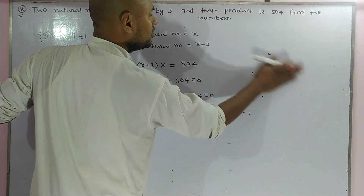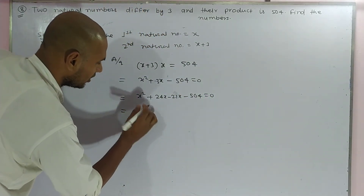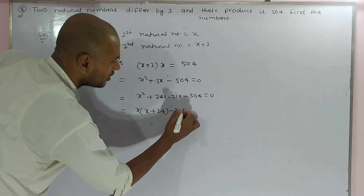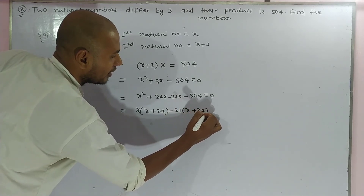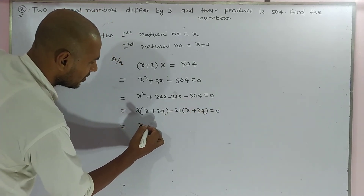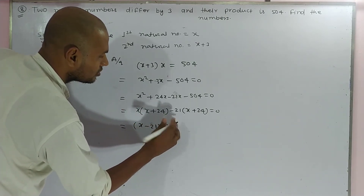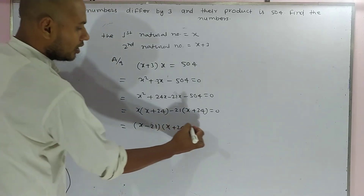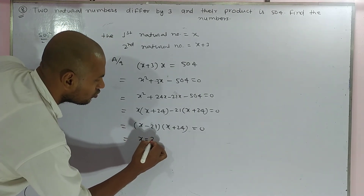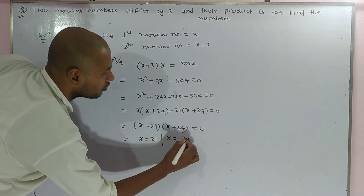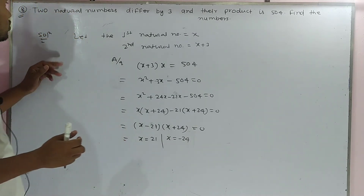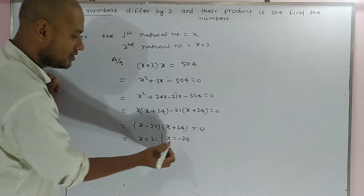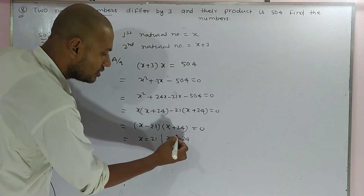Taking x as common from the first two terms gives x times x plus 24, and taking minus 21 as common from the last two terms gives minus 21 times x plus 24. Then taking x plus 24 as common, we get x plus 24 times x minus 21 equals 0. So x equals 21 or x equals minus 24.